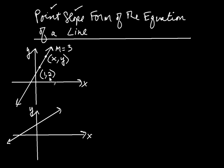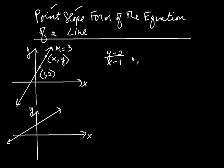I'm going to take y subtract 2, so I get y minus 2, and I'm going to divide that by x take away 1. That's how you find the slope of a line — this coordinate take away that one divided by this coordinate take away that one has to be equal to the slope of the line, which is positive 3. That's always the relationship between two points on the line: if you create the fraction by taking the difference of their coordinates, you have to get the slope.